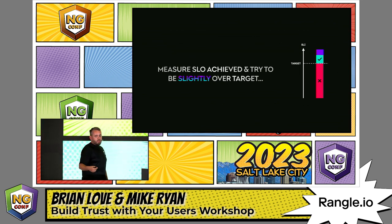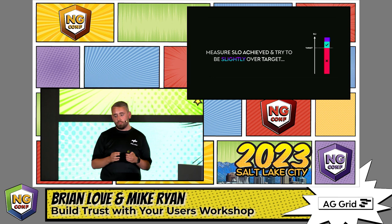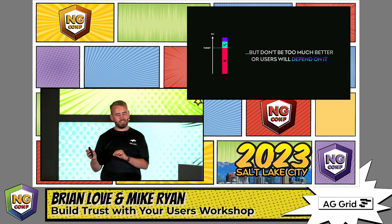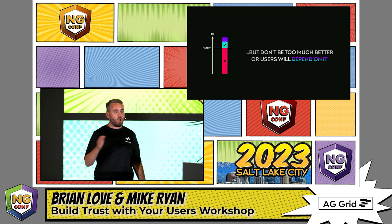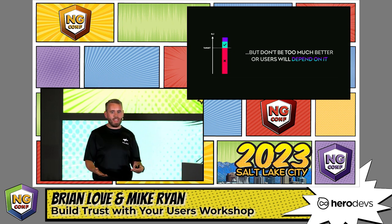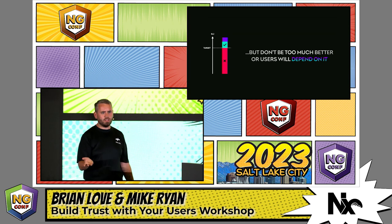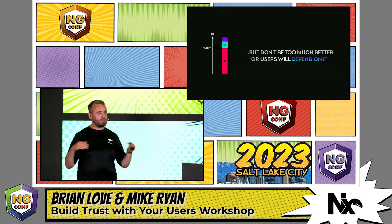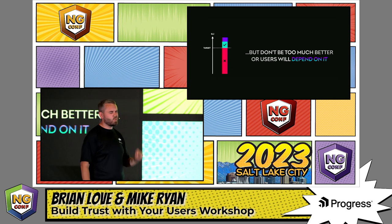We want to measure our SLOs and try to be slightly over the target — just good enough for people to be happy. But we don't want to be too aggressive, because our users will start to depend on how performant our app is. If things are so quick and users get really used to it, they'll be upset when things get slow. But if the app was always a bit slow but still made users happy, they won't come to depend on that performance. As engineers, we always want to make the fastest, most performant thing, but that can really hurt us in the long run.